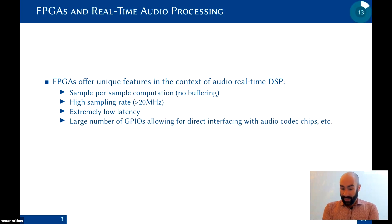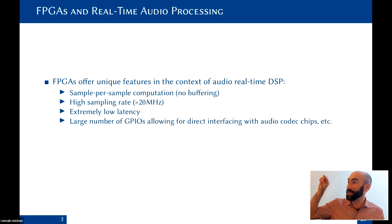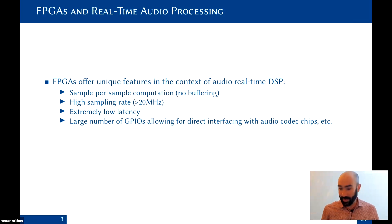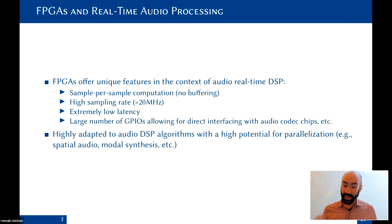FPGAs have a very large number of GPIOs — general purpose inputs and outputs — allowing direct interfacing to very low-level chips. You can connect many audio codec chips to an FPGA, which isn't easily doable on a CPU. FPGAs are also well adapted for audio algorithms with high parallelization, such as spatial audio or modal synthesis.